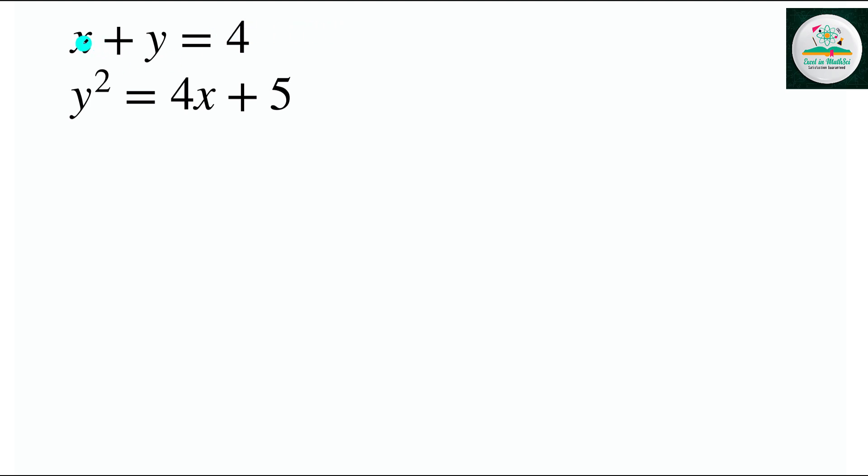Because we have the coefficient on the x and the y as one, we can rearrange for either. We can either substitute y equals 4 minus x and get everything in terms of x, or substitute x equals 4 minus y. You can substitute either, it doesn't matter which way, but you'll get the same answer.